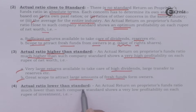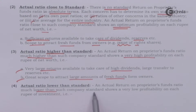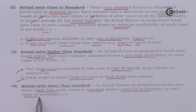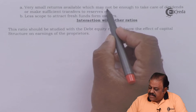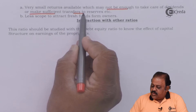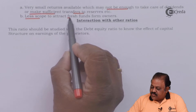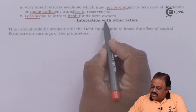An actual return on proprietors fund ratio much lower than the company standard shows very low profitability on each rupee of investment made by the owners — that is, very small returns available which may not be enough to take care of dividends or make sufficient transfer to reserves. Therefore, there is less scope to attract fresh funds from the owners.